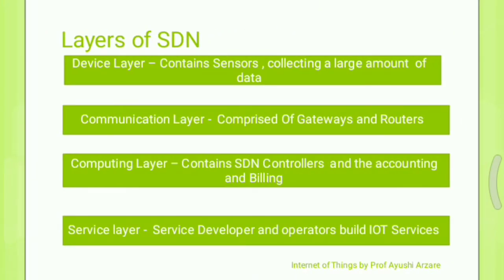These are the layers of SDN: Device Layer, Communication Layer, Computing Layer, and Service Layer. Device Layer contains sensors and collects a large amount of data. Communication Layer comprises gateways and routers. Computing Layer contains SDN controllers and accounting and billing. Service Layer contains service developers and operators who build IoT services.